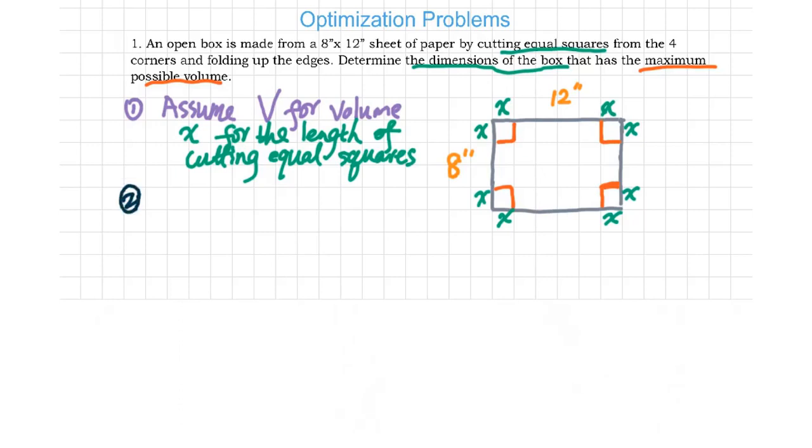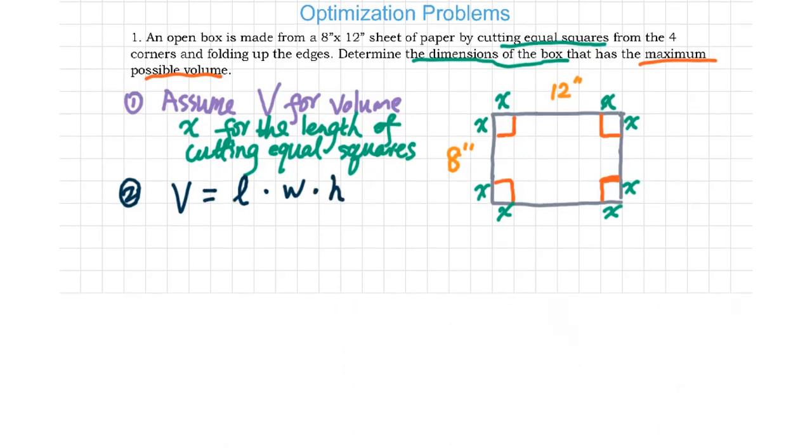Now, second step, we will work out the equation. We know the volume for a rectangular box, that is the length times width times height. From this diagram, we could say the length of this box will be 12 minus 2x. For the width is here, that will be 8 minus 2x. The height will be x when you fold up the edge of this box.